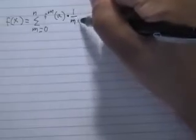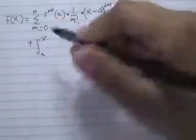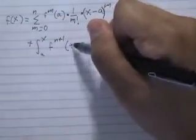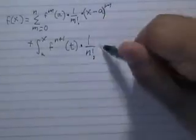Multiple iterations of this process yield that f of x equals the sum from m equals 0 to n of the mth derivative of f evaluated at a times 1 over m factorial times x minus a to the mth power, plus the integral from a to x of the n plus first derivative of f evaluated at t times 1 over n factorial times x minus t to the n dt.